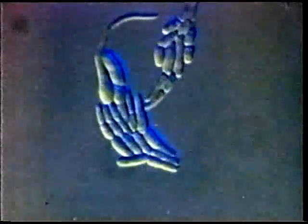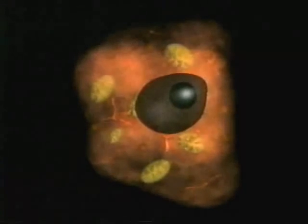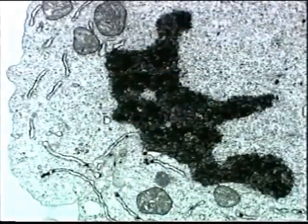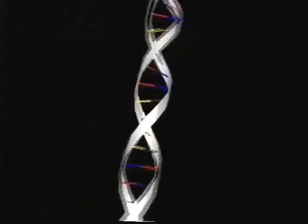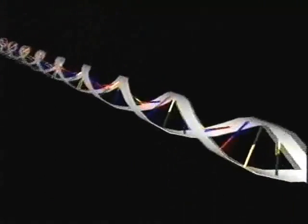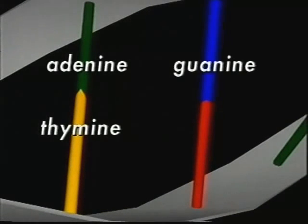But producing new cells also requires something else — it requires raw materials, one of the most important of which is protein. Producing protein is a major function of cells throughout their life, and it's controlled from within the nucleus. The chromosomes that we saw in mitosis contain a substance called DNA, deoxyribonucleic acid. It can be represented like this, a double helix of molecules linked together. The links are molecules called bases, and there are four different ones: adenine, thymine, guanine, and cytosine.